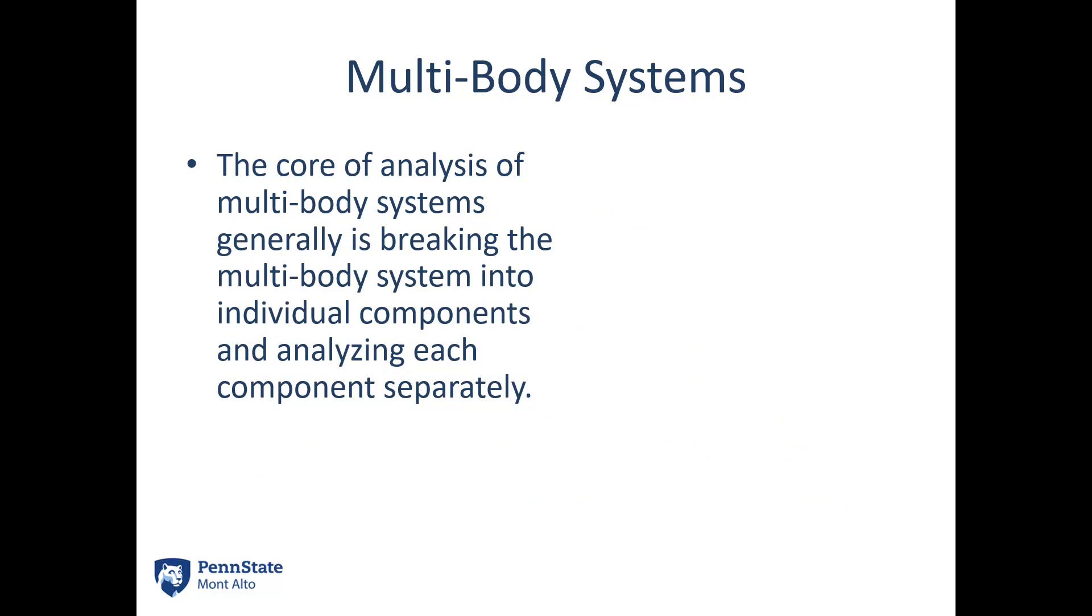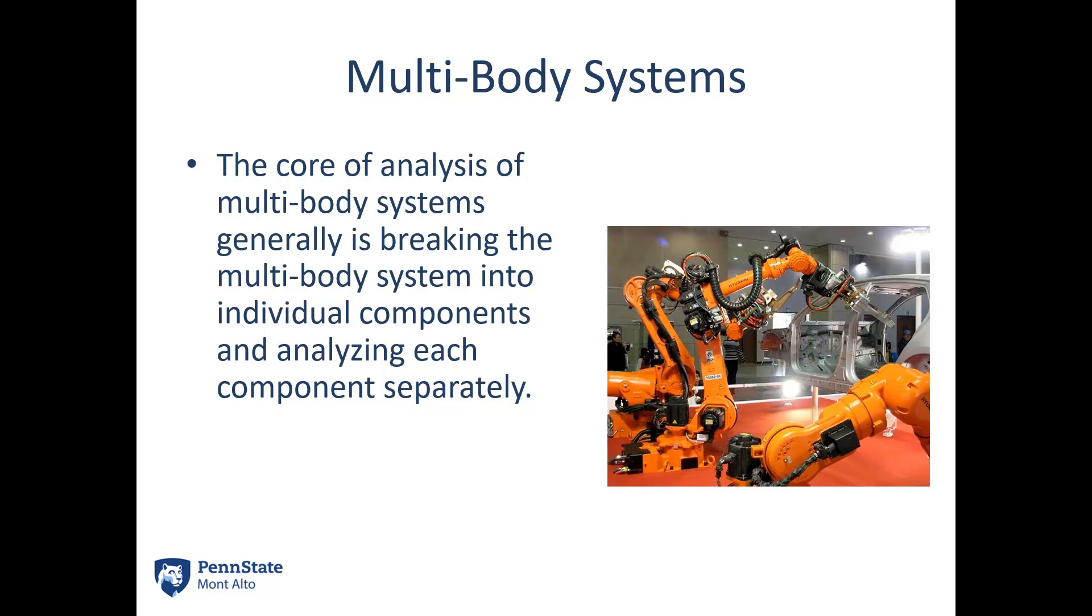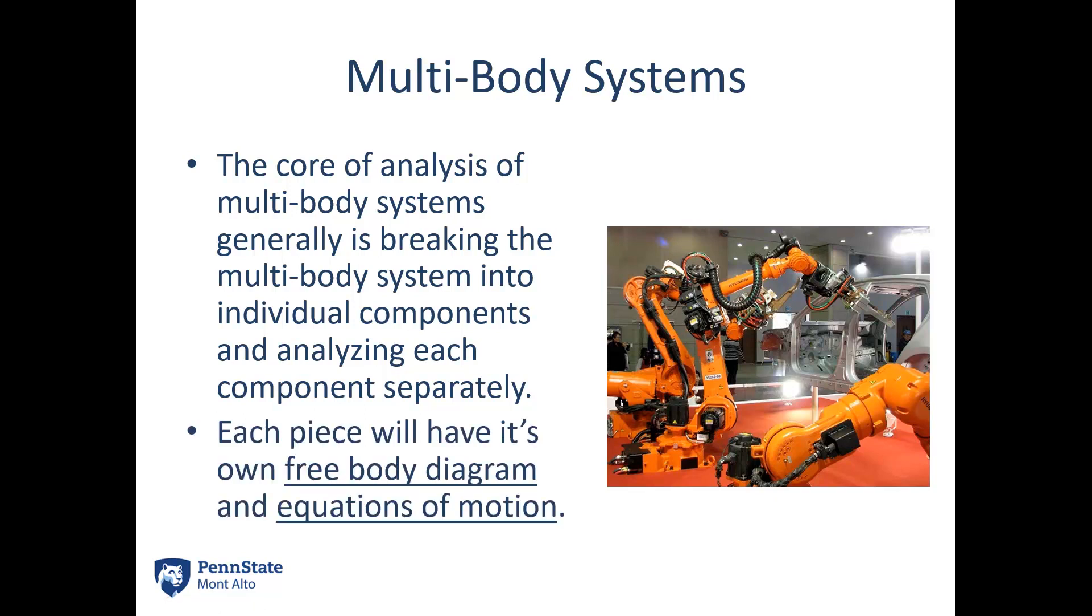So with the multi-body systems the core of the analysis is breaking down the multi-body system into individual components and analyzing each component separately. So for a robotic arm, each component would be each rigid body, so the joints are where we separate this out. So piece number one would probably be this piece right here, piece number two would be the second section of the arm, and piece number three would be the third section of the arm. The joints are where we separate these things. So each piece is going to have its own free body diagram and each piece is going to have its own equations of motion that we're going to have to solve.